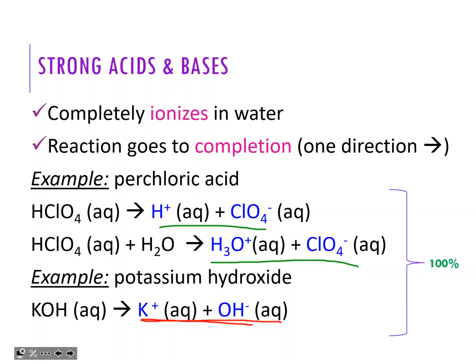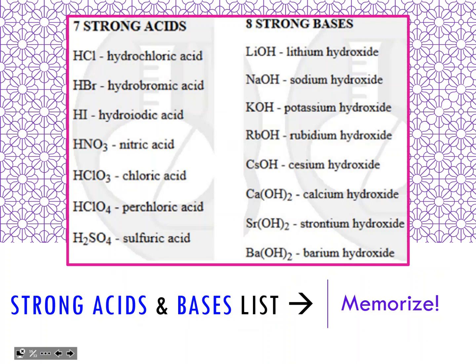Weak acids and bases do not completely ionize. This is your list that you need to memorize - the list of the strong acids and the strong bases. The bases are not too challenging because most of them are your group one - group 1A, the alkali metals - alkali metal hydroxides.